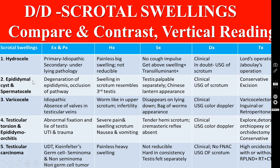I have given all the differential diagnoses for the scrotal swelling — namely hydrocele, epididymal cysts and spermatocele, varicocele, testicular torsion, and testicular carcinoma. In one tabular column I have given the etiopathogenesis for all these conditions, the symptoms, signs, investigations, and treatment. What you have to do here is compare and contrast the different conditions and do what is called vertical reading. If you want to compare the symptomatology in hydrocele with other conditions like varicocele, you read vertically — this allows you to differentiate one disease from another. This is what is called clinical reasoning, the most important skill you have to develop during your clinical posting.